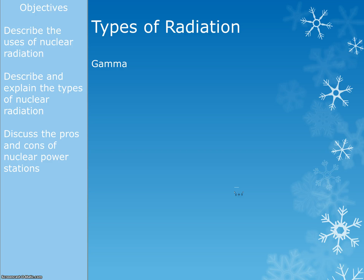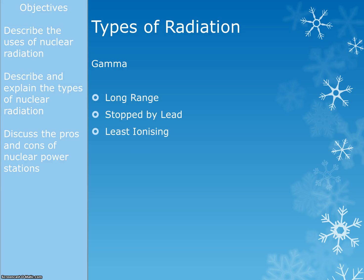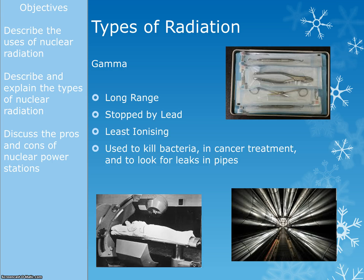Our final variety is gamma radiation, which is long-ranged — it can travel kilometres. It can be stopped by lead; it goes through paper and aluminium, so we need a thick layer of lead to stop it. However, it is the least ionising, so it is the least dangerous. One use is killing bacteria — instruments are packaged in plastic, exposed to gamma radiation which kills everything inside, and they stay sterile until you open the packaging.